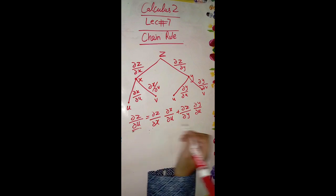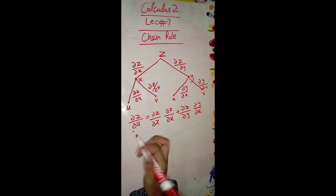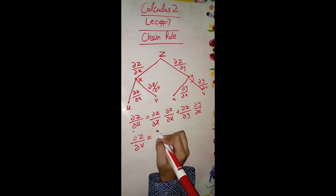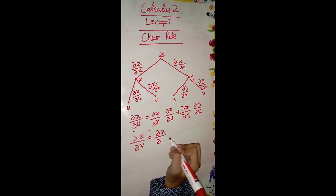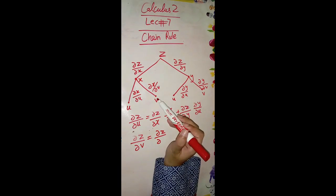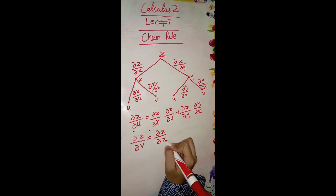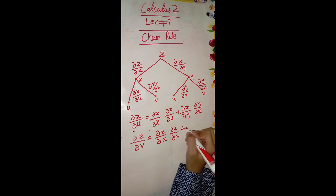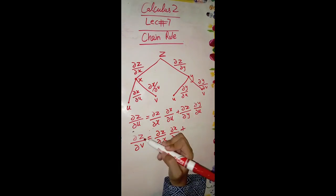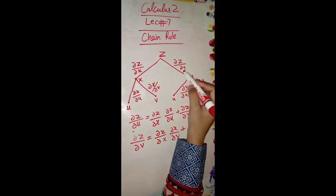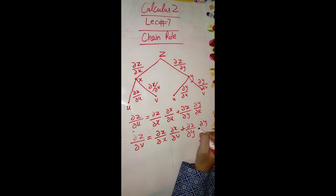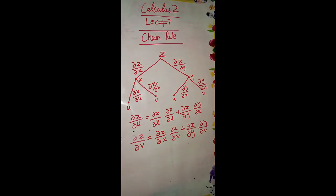For ∂z/∂v, we write ∂z/∂x multiplied by ∂x/∂v, plus ∂z/∂y multiplied by ∂y/∂v. This is how we express and solve the chain rule.